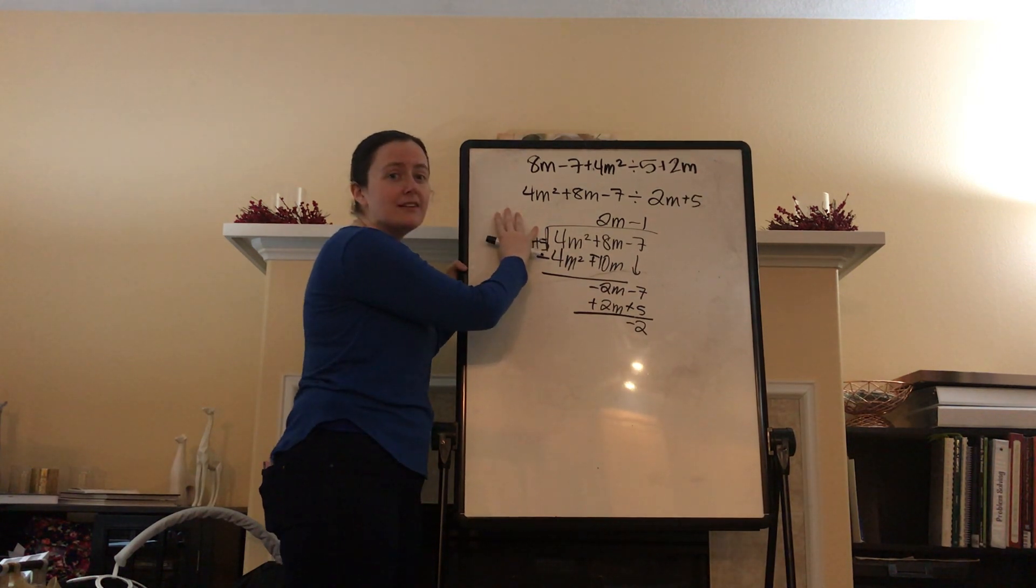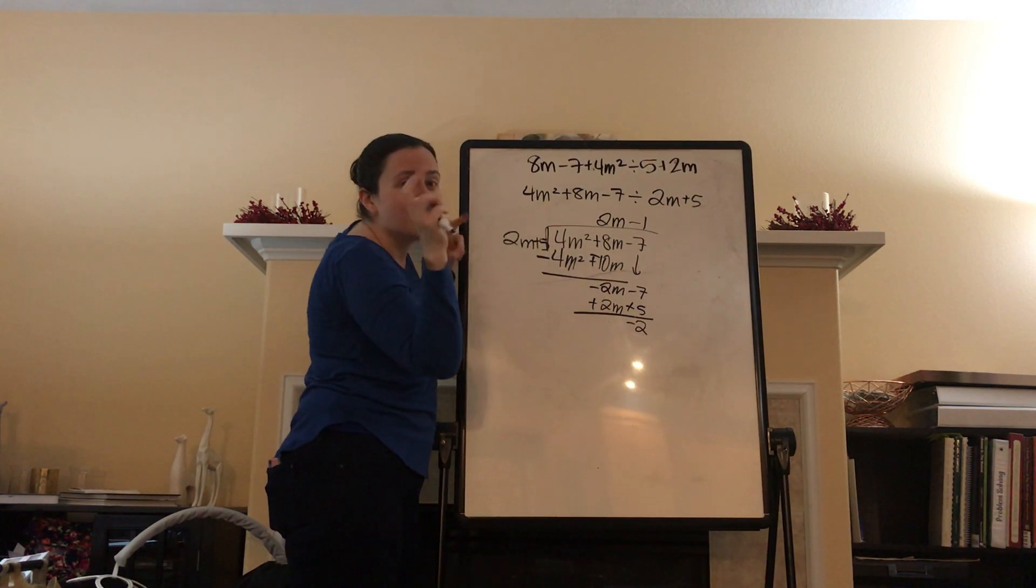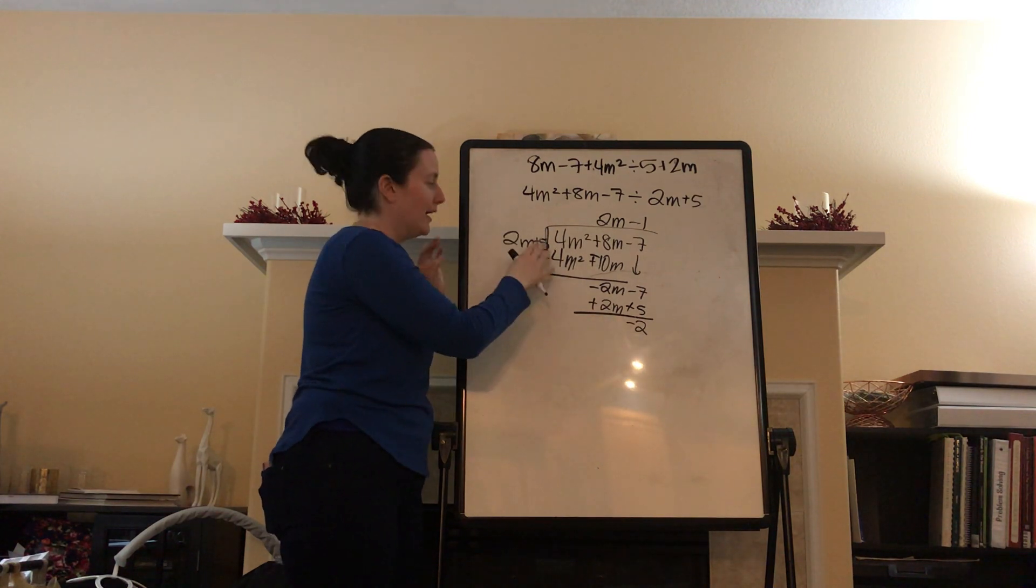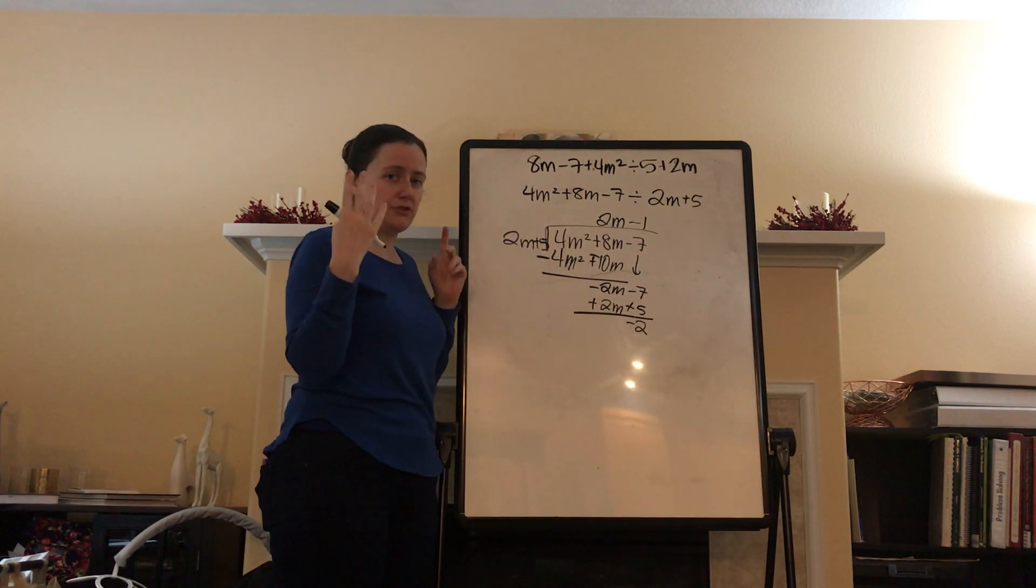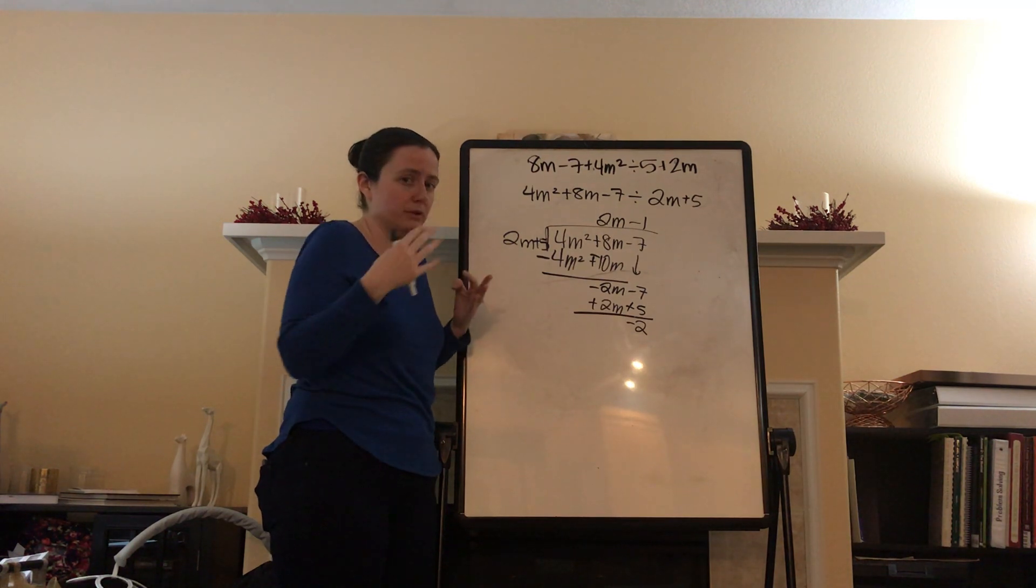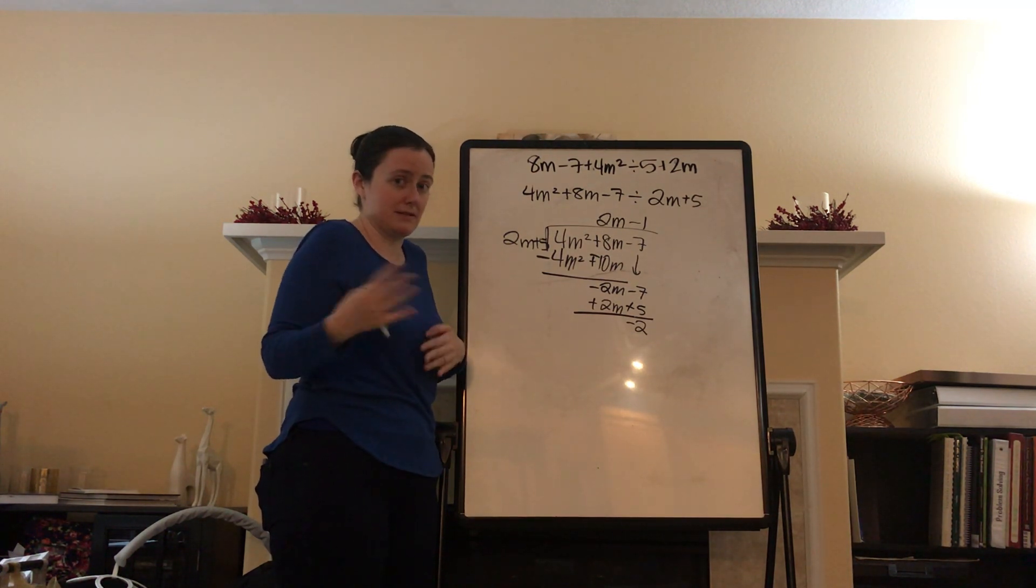But I could use a fraction. What would I do if I had a remainder of 2 and I was dividing by 5? I would just put it as 2 fifths, right? Like, 2 over 5. 2 out of 5 pieces. That's all we would do.